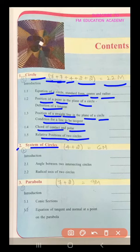Second chapter, system of circles, 1 four mark and 1 two mark, that is totally 6 marks from this chapter. Introduction, angle between two intersecting circles, radical axis of two circles.